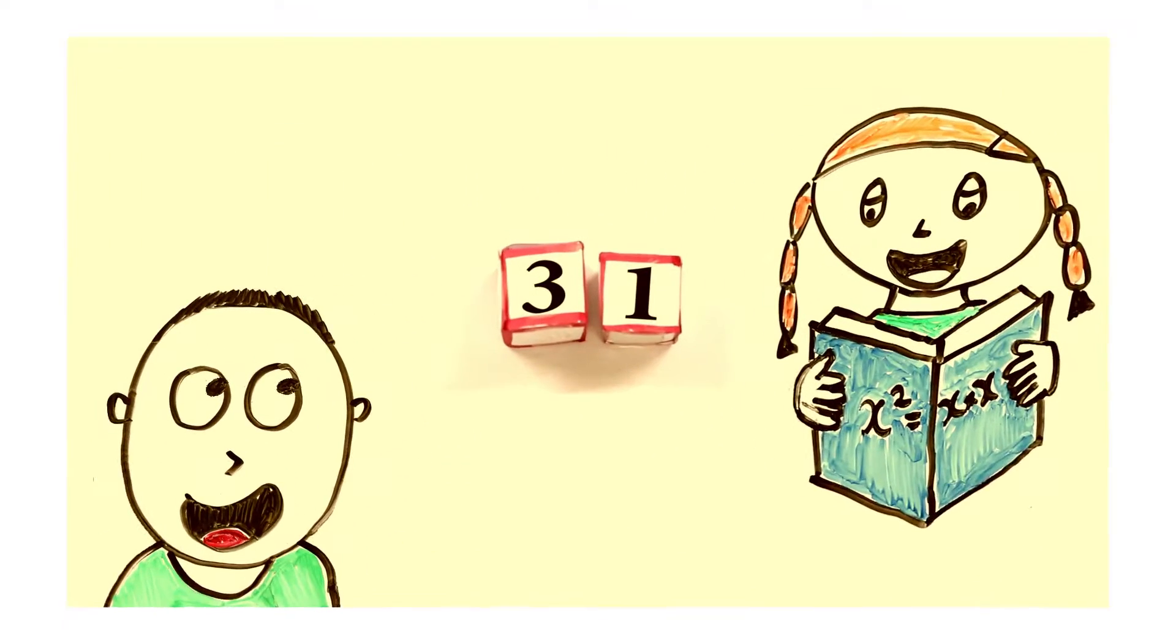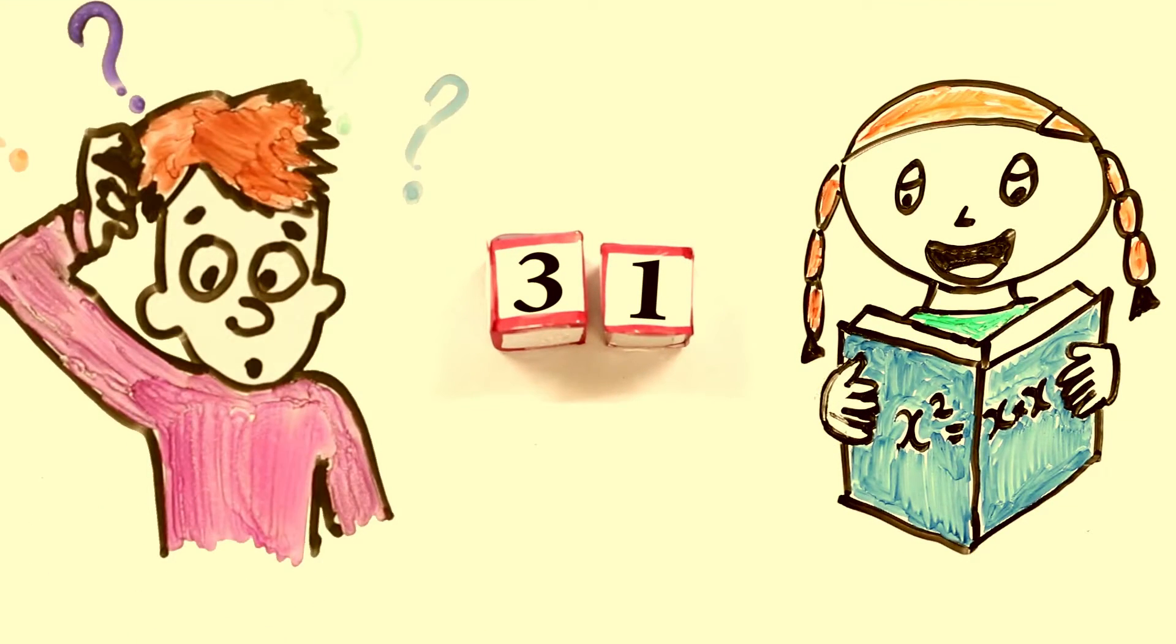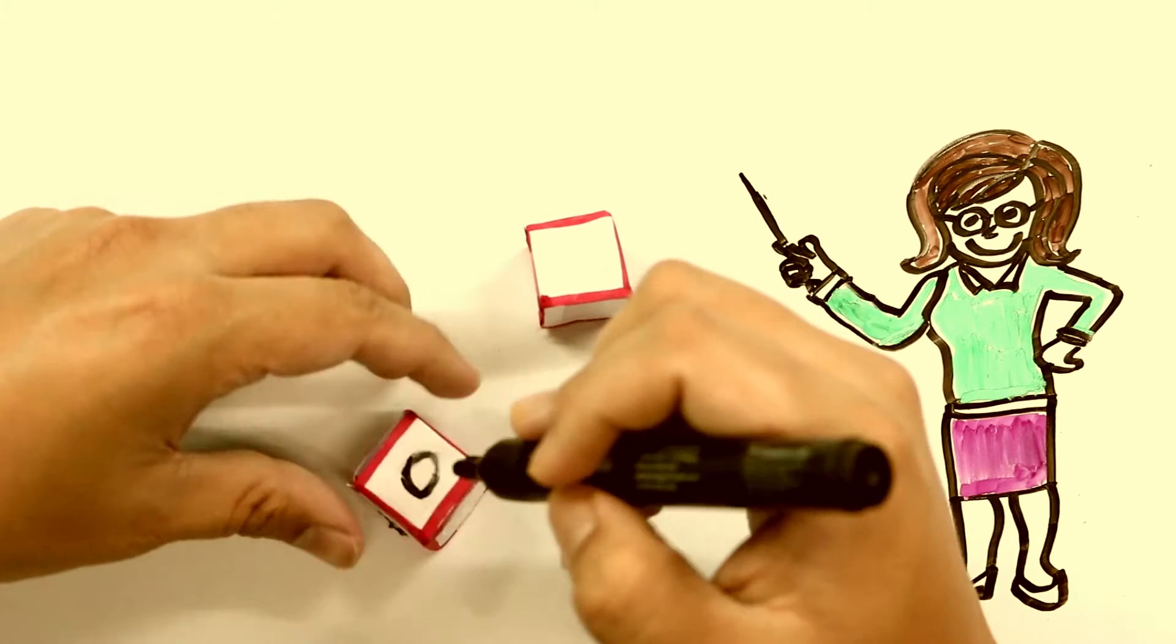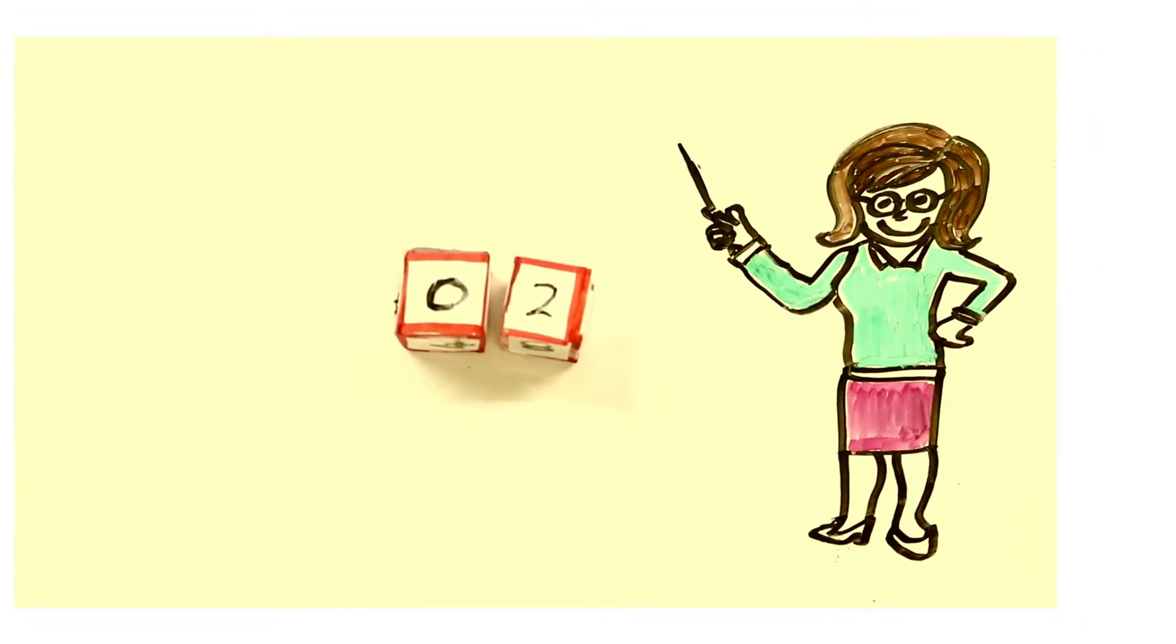In our previous video, we asked you the solution to a puzzle which involved two dice. You had to write numbers on each dice in such a way that any date of a month could be shown using both of them.